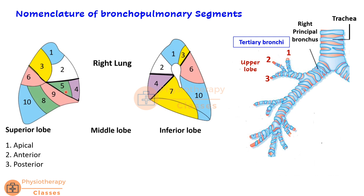The middle lobe has two bronchopulmonary segments, numbered four and five. The fourth, more present on the medial surface, is the medial bronchopulmonary segment, and the fifth is the lateral bronchopulmonary segment.